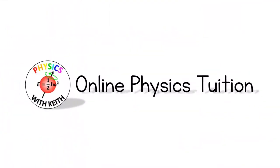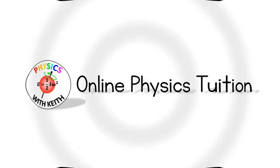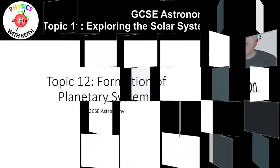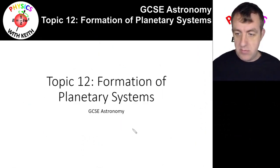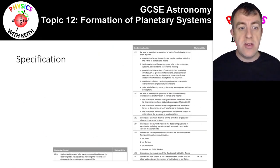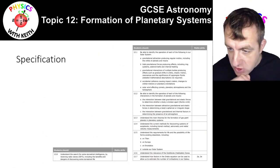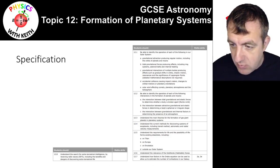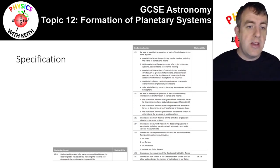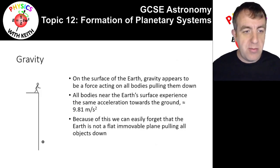This video is all about formation of planetary systems — that's topic 12 of the GCSE in astronomy by Edexcel. Let's look at the specification, as we always do, to see what we're covering. There doesn't look like there's so much in this one, but there is some detail we need to go into, so let's get cracking straight away.